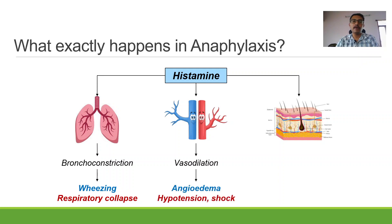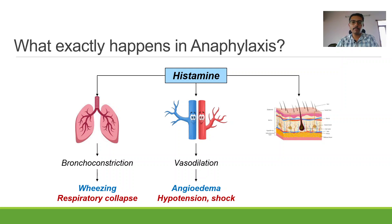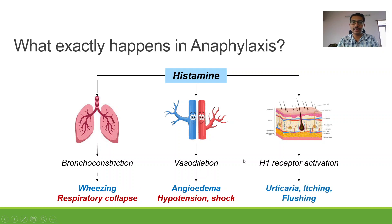The second place where histamine acts is the blood vessels, where it produces vasodilatation. Because of vasodilatation, all the fluid starts moving out of the blood vessels into the tissues, causing swelling — leading to angioedema. In the blood vessels, since all the fluid has moved out, blood pressure starts to fall — there is hypotension and shock. Remember that all these things are happening because histamine is activating H1 receptors. H2 receptors are also there, sitting in the stomach, but they are not as important when it comes to anaphylaxis. On the skin, histamine also activates H1 receptors, leading to urticaria or hives, itching, and flushing.